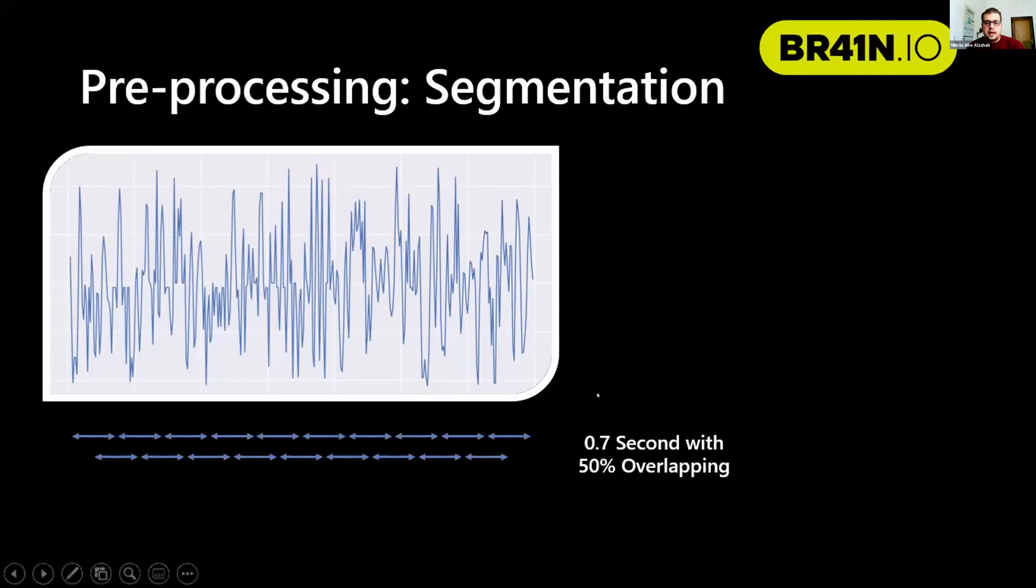So in this case, we have a higher range of 0.7 seconds. And 50% overlapping, which is 350 milliseconds to move from one event to another.